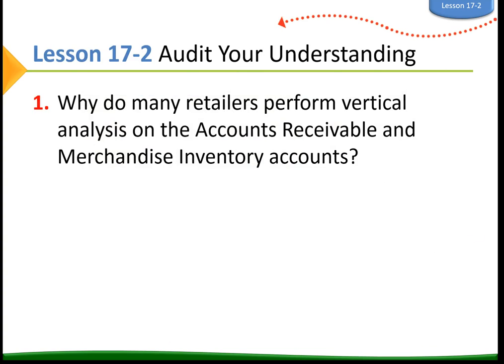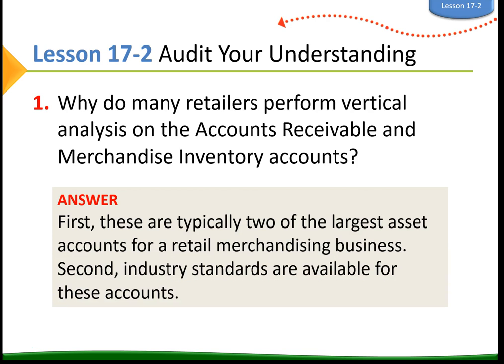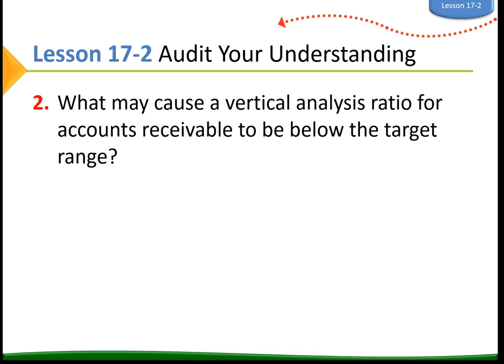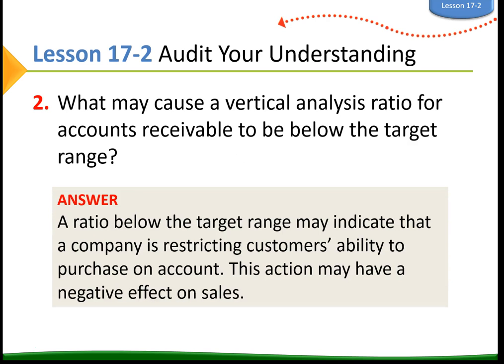Why do many retailers perform vertical analysis on accounts receivable and merchandise inventory? First, these are typically two of the largest asset accounts for a retail merchandising business. Secondly, industry standards are available for these accounts. What may cause a vertical analysis ratio for accounts receivable to be below the target range? A ratio below the target range may indicate that a company is restricting customers' ability to purchase on account, which may have a negative effect on sales.